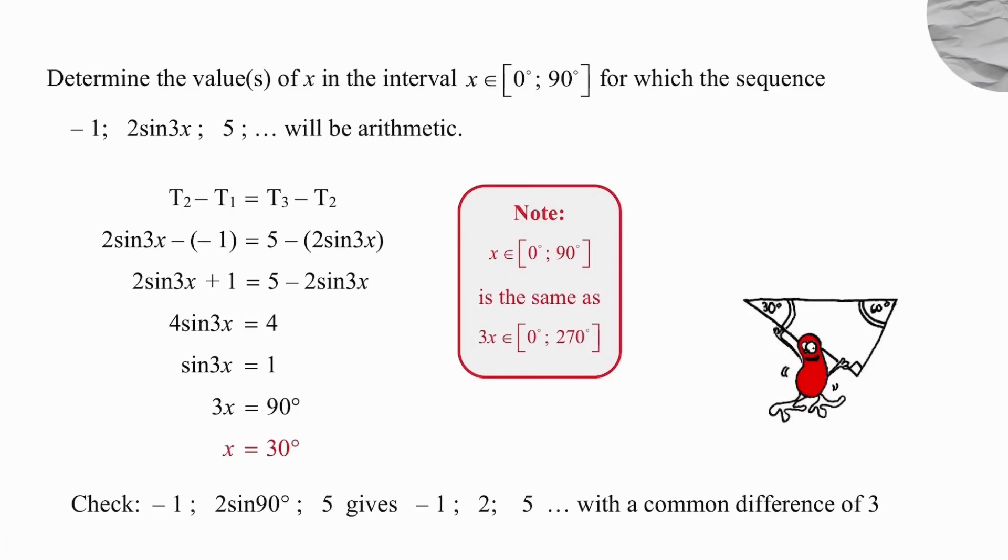We're going to stick to our basics and our basics dictate that if we take the second term and subtract the first term, the result will be the same as taking the third term and subtracting the second term. Simple underlying principle for an arithmetic sequence. This means that the second term of 2sin3x subtract the first term of negative 1 will produce a result of 2sin3x plus 1. We do exactly the same thing with the third term which is 5. We subtract the second term which is 2sin3x and we end up with 5 minus 2sin3x. We equate those results and simplify. If we work that out we can see that sin3x has to equal 1.